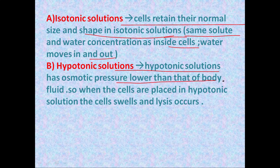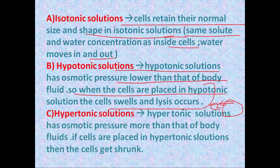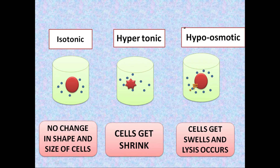When cells are placed in a hypotonic solution, they swell and lysis occurs — the cells burst and their contents come outside. In hypertonic solution, the osmotic pressure is higher than that of body fluids, so cells placed in hypertonic solution shrink. In summary: isotonic — no change in shape and size; hypertonic — cells shrink; hypotonic/hypo-osmotic — lysis occurs.